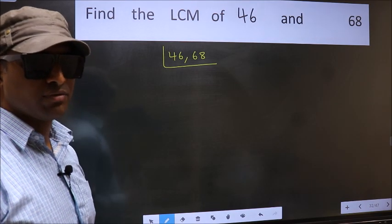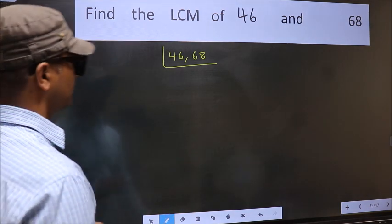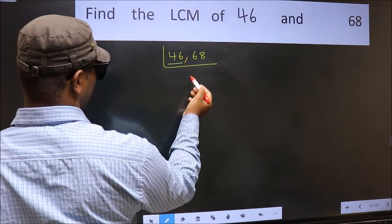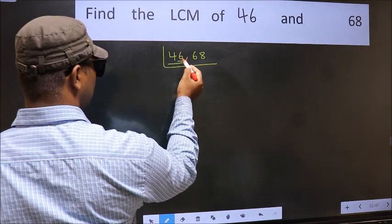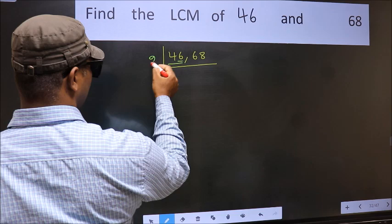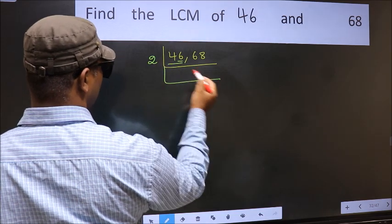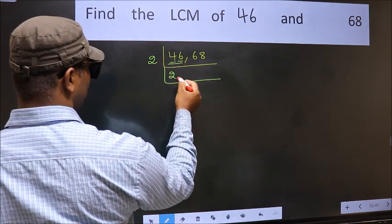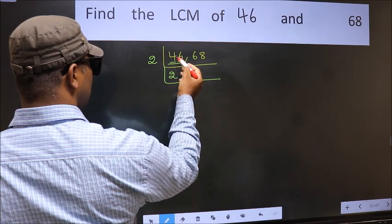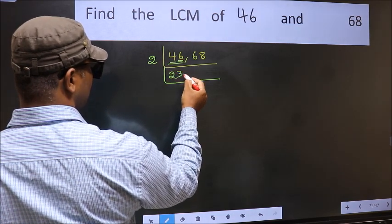Now focus on the first number, which is 46 here. For this number, last digit 6 is even, so take 2. First number 4. When do we get 4 in 2 table? 2×2 is 4. The other number 6. When do we get 6 in 2 table? 2×3 is 6.